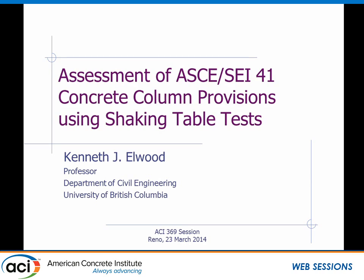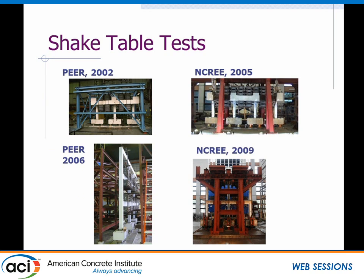I'm going to follow on from what Wasim was talking about, a similar topic area on concrete column provisions. I'm specifically going to look at the ASCE 41 provisions in comparison with a series of shake table tests done at Berkeley at the PEER center shake table, as well as at NCRI in Taiwan. There are actually seven test sets in total, but I've just shown four here to highlight a few features.